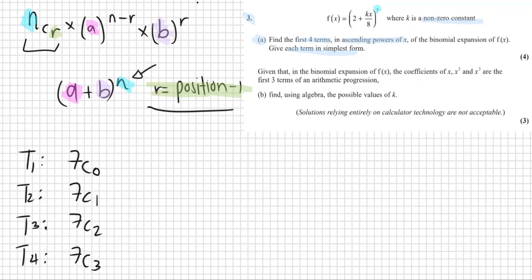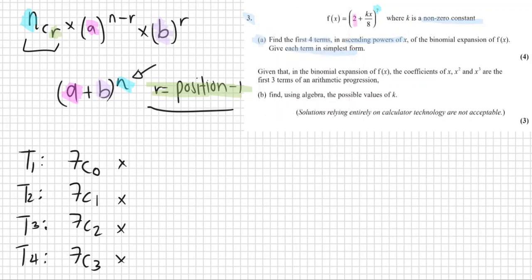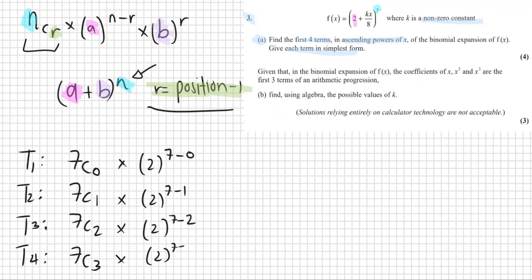Done with all the nCr values. Now we look at the a values. Our a in this expansion is 2. And n minus r is 7 minus r, where r is the position minus 1. So the first term has r equals 0, the second has r equals 1, and so on.